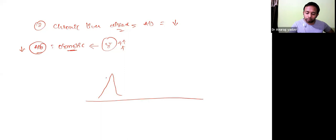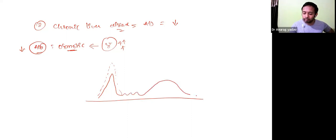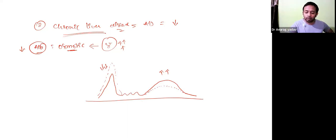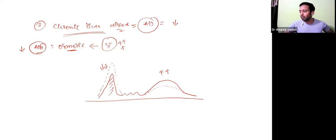On the electrophoretic pattern in chronic liver disease, albumin is reduced from its normally tall peak. Alpha-1, alpha-2, and beta are relatively normal, but the gamma portion is broadly increased. So albumin is reduced and the gamma portion is increased — this is the pattern you see in chronic liver disease, where gamma globulins compensate for decreased albumin because albumin is synthesized only in the liver.